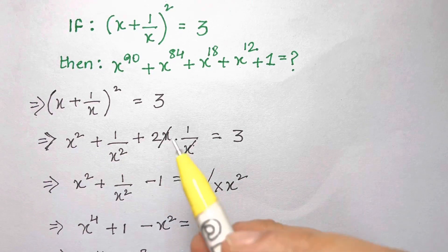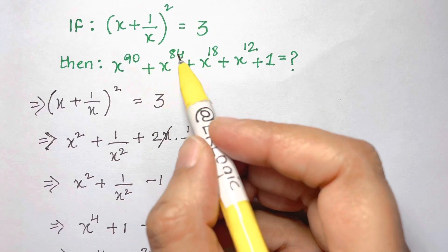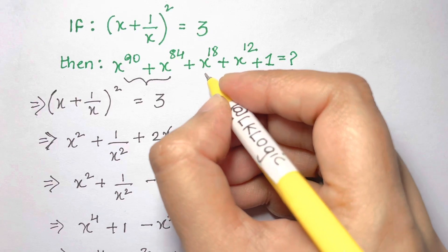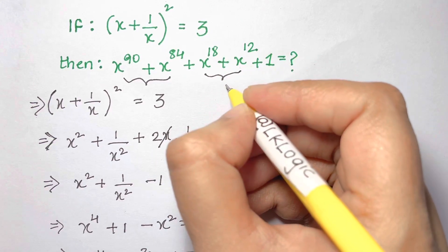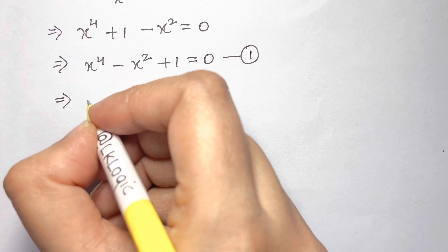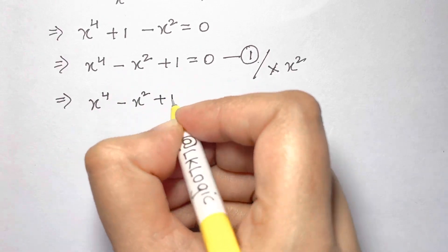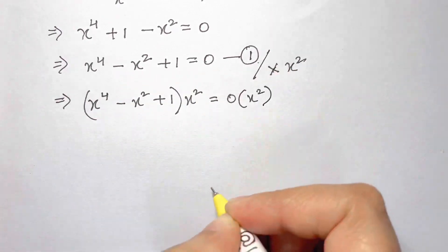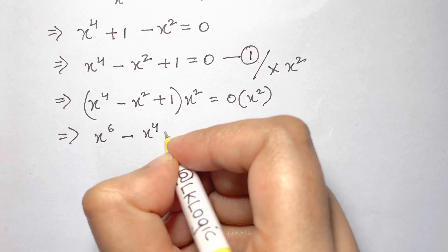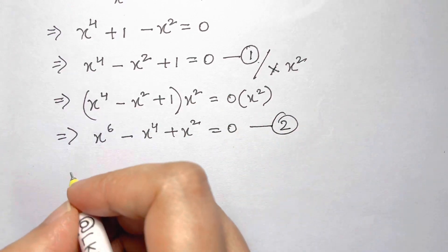Looking at the question, the exponents 90 and 84 differ by 6, and the exponents 18 and 12 also differ by 6. So we want to work in powers of 6. Multiplying equation 1 by x² gives x⁶ - x⁴ + x² = 0. Let this be equation 2.